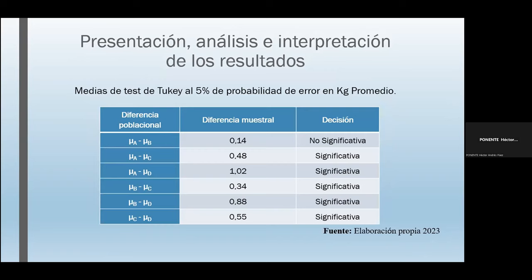También se sometió a un test de Tukey al 5% de probabilidad de error en kilogramos promedio. El valor para Tukey fue de 0,16. La diferencia entre tratamiento 0 y tratamiento 1 fue de 0,14, siendo el único que no tuvo diferencia significativa. El resto estuvo por encima de 0,16, y la mayor diferencia muestral fue entre tratamiento 0 y tratamiento 3, que fue de 1,02.